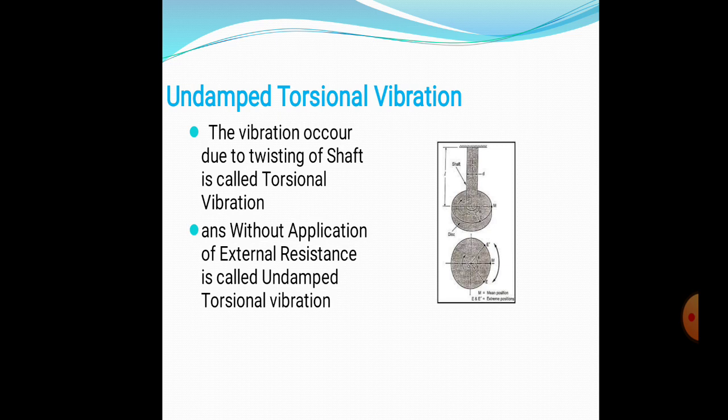The shaft has length L and a twisting moment occurs after application of torque over the disc with angle theta. Vibrations occur due to twisting of the shaft—this is called torsional vibration. Without application of external force, it is called undamped torsional vibration. Torsional means twisting moment of the shaft along the axis.